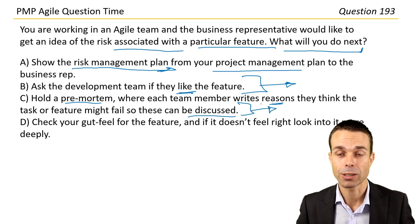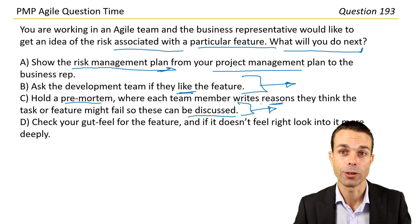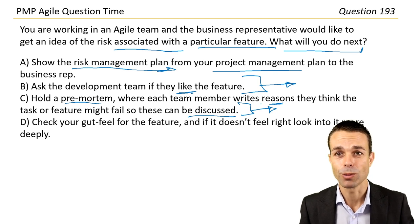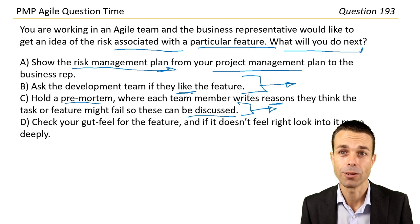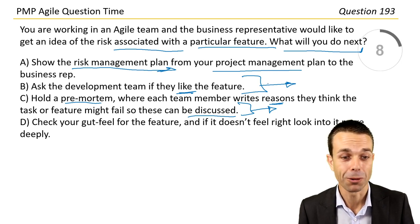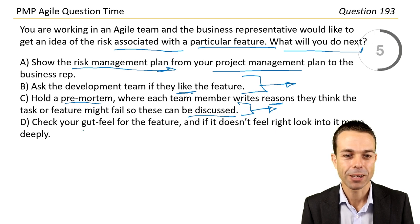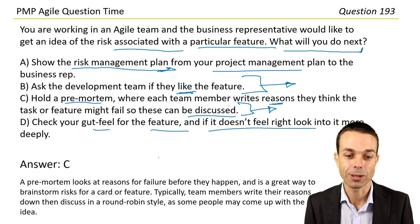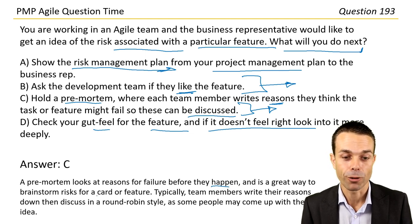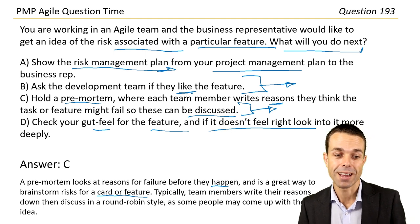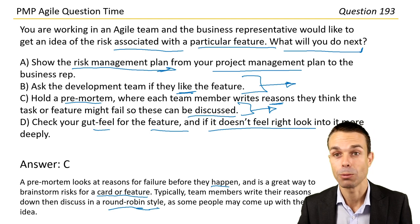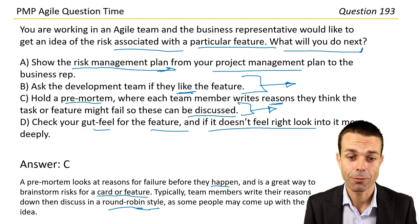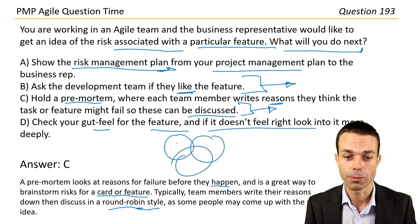A post-mortem is at the end of a project where you discuss reasons things went wrong — we already know they went wrong. But a pre-mortem brainstorms potential failures in advance, before they might happen. Answer C: A pre-mortem looks at reasons for failure before they happen and is a great way to brainstorm for a card or feature. Typically, team members write their reasons down and discuss in a round-robin style. You can then group similar ideas together in an affinity diagram.